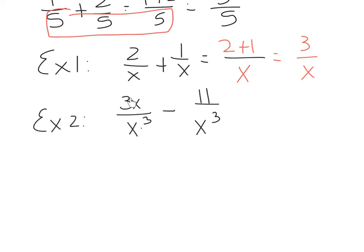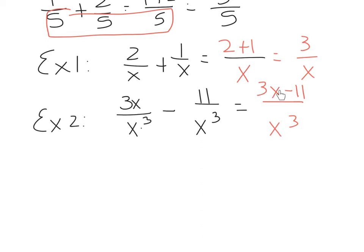Example 2 is 3x over x cubed minus 11 over x cubed. Again, the denominators are the same, so this denominator over here will match these two — it will be x cubed. The numerators will be subtracted this time, combining like terms: 3x minus 11. Those terms are not like terms, so you can't subtract them or simplify further. Do not be tempted to start canceling these — this is a term or part of a term, it cannot cancel with anything in the denominator.